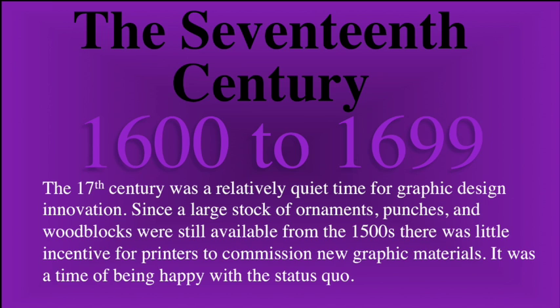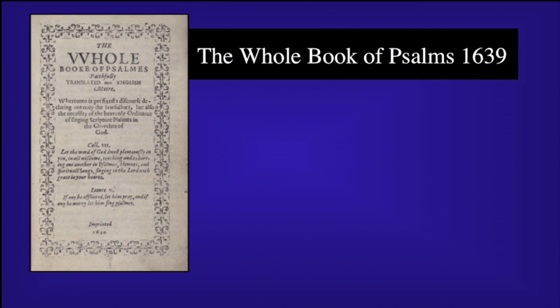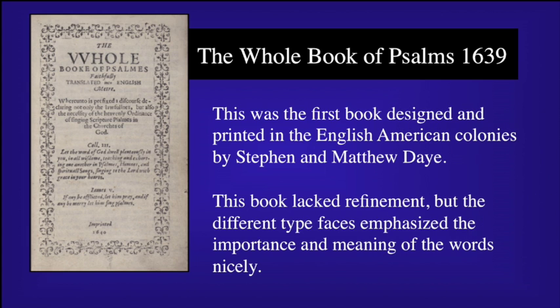However, over in the North American colonies, a British locksmith was commissioned by a wealthy dissenting clergyman to establish a printing press. The British locksmith's name was Stephen Daye. The first printing was done in 1639. This was actually the very first book to be designed and printed fully in the English American colonies, entitled The Whole Book of Psalms. It lacked refinement, but the different typefaces emphasized the importance and meanings of the words nicely. Even though censorship and taxes were heavy on both newspapers and advertising, printing grew steadily in the colonies. By 1775, there were about 50 printers in the 13 colonies, and they played a very important part in the upcoming revolution.